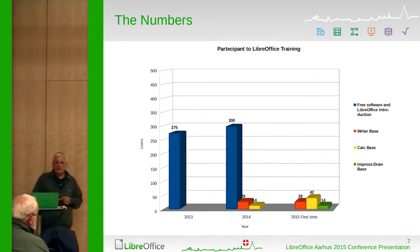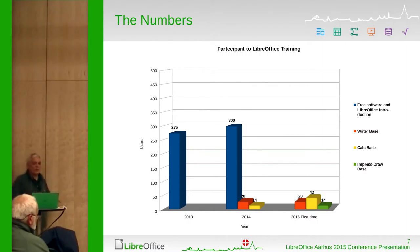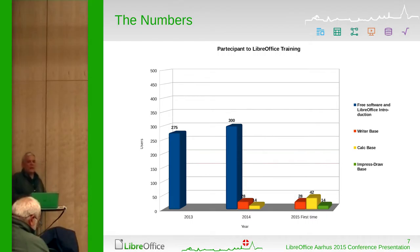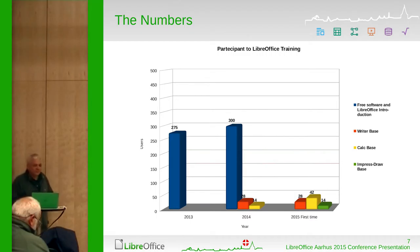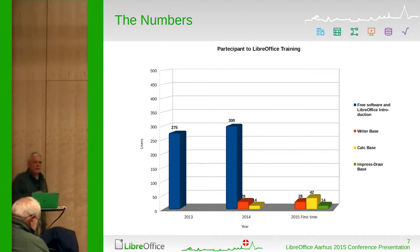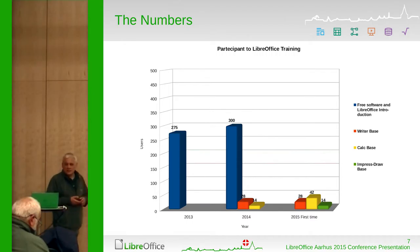This chart represents the number of users involved in training during the last three years, and up to now. The trainings are Calc, Writer, Impress, and Calc for beginners. In the future, we will have training for Calc and Writer Advanced.